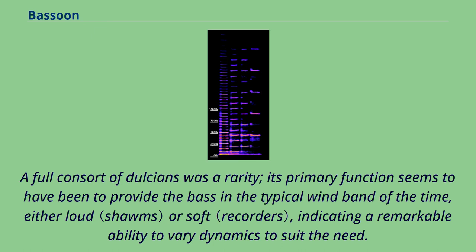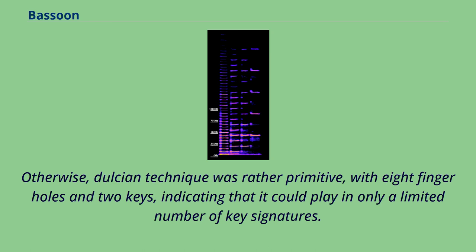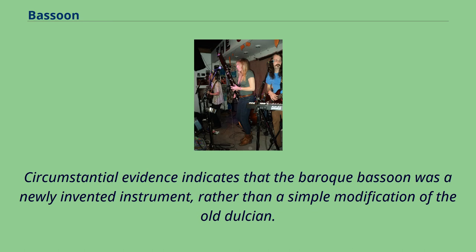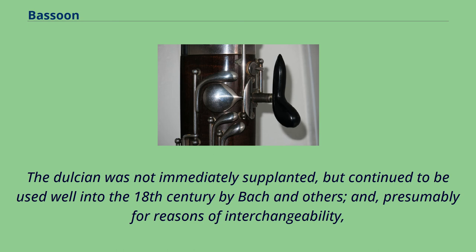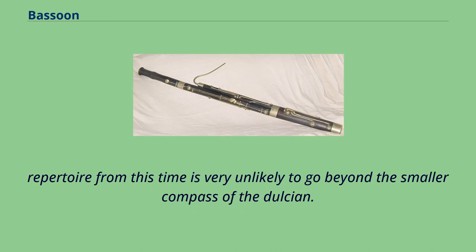Dulcian technique was rather primitive, with eight finger holes and two keys, indicating that it could play in only a limited number of key signatures. Circumstantial evidence indicates that the baroque bassoon was a newly invented instrument rather than a simple modification of the old Dulcian. The Dulcian was not immediately supplanted, but continued to be used well into the 18th century by Bach and others, presumably for reasons of interchangeability. Repertoire from this time is very unlikely to go beyond the smaller compass of the Dulcian.